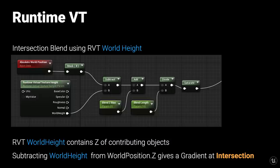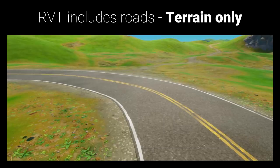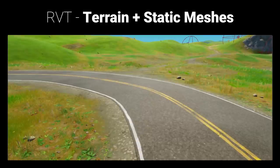To get a material blend from the runtime virtual texture world height, we sample world position's Z channel, sample the RVT world height, subtract them, add a bias, and divide by our desired length before clamping — giving an alpha to blend multiple materials. Roads blend into landscape using this virtual texturing: the road texture is written into the RVT and seamlessly blended into the terrain with no visible geometry needed for rendering. We keep the road geometry only because road collision gives nicer results for vehicle driving physics, and the geometry needs to match the collision.